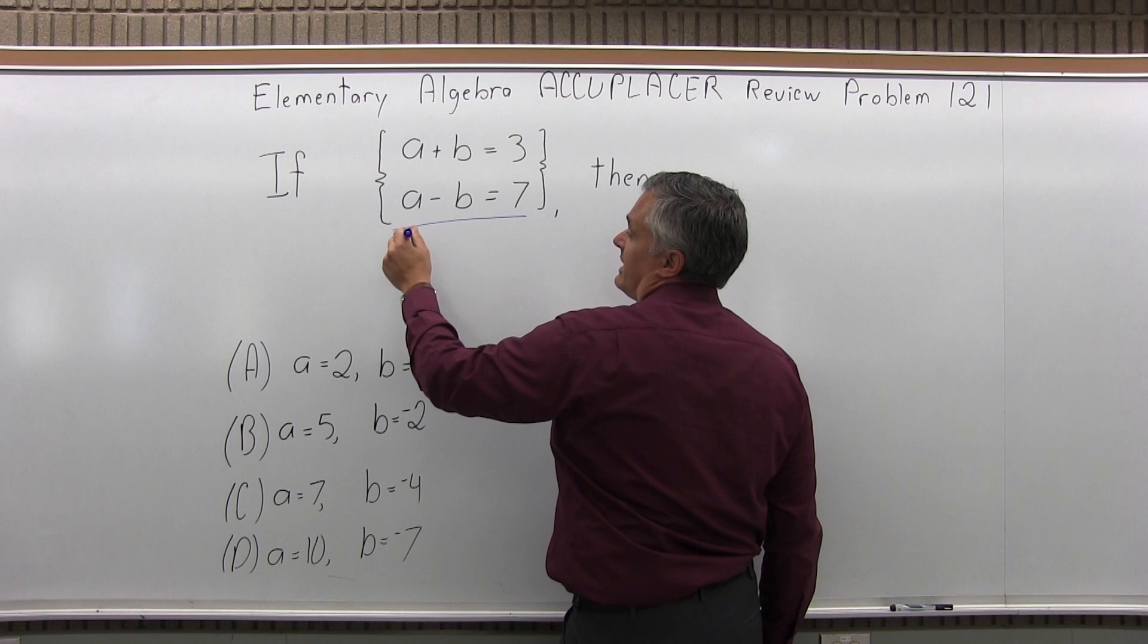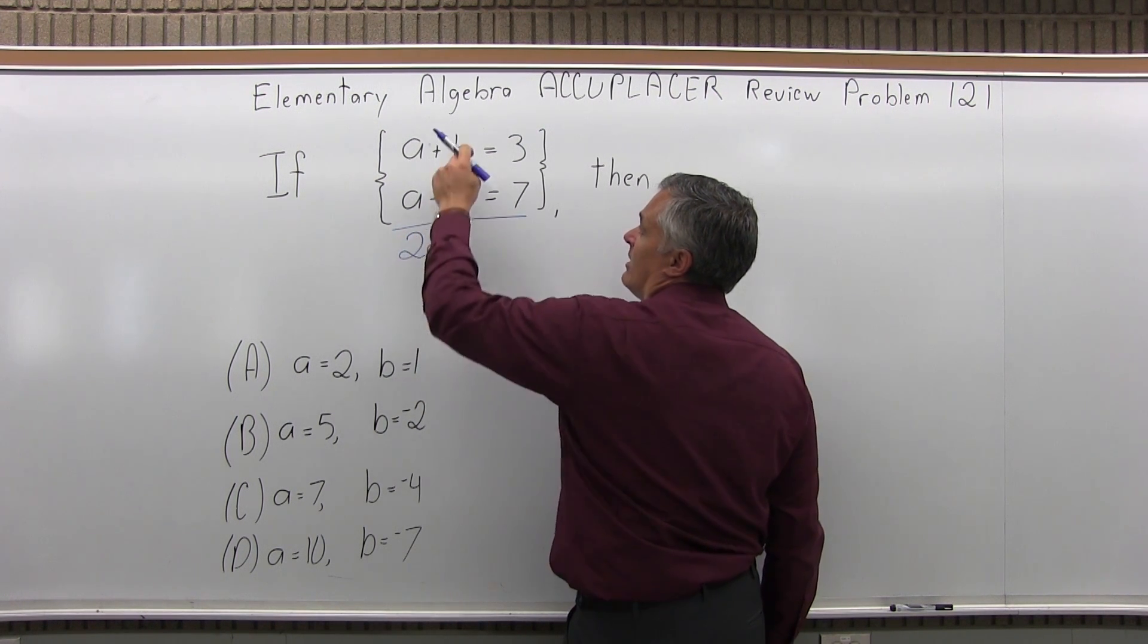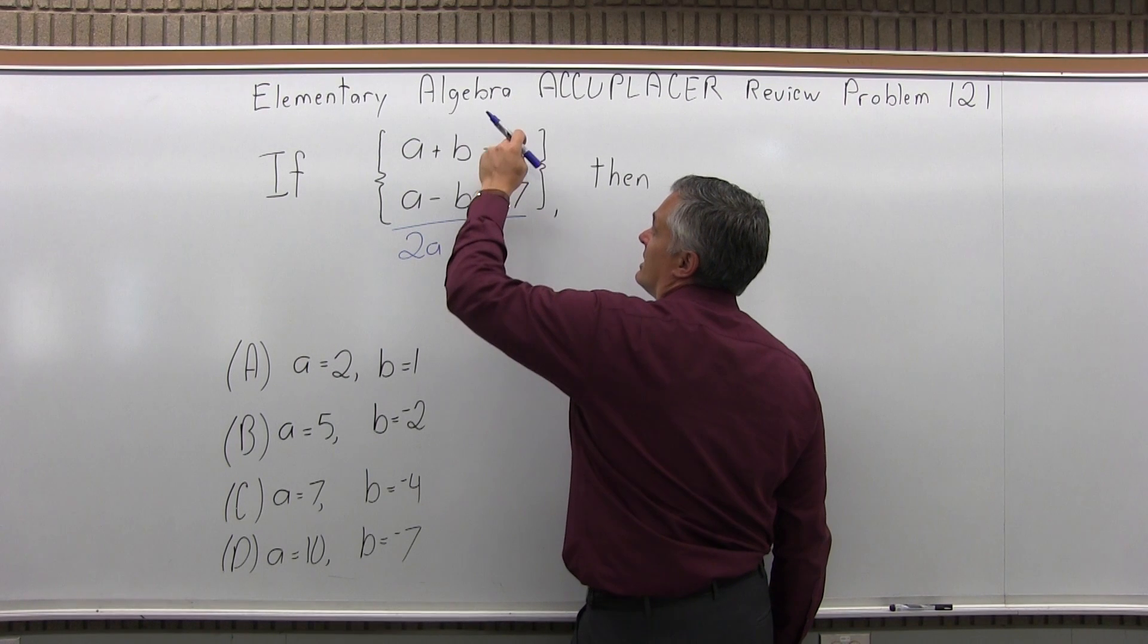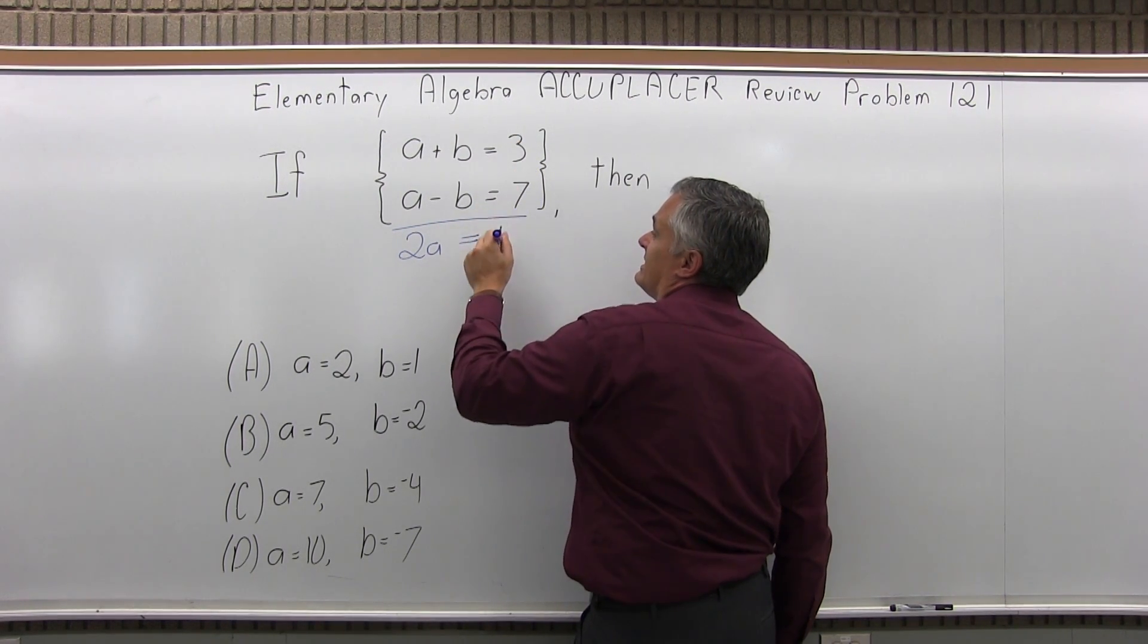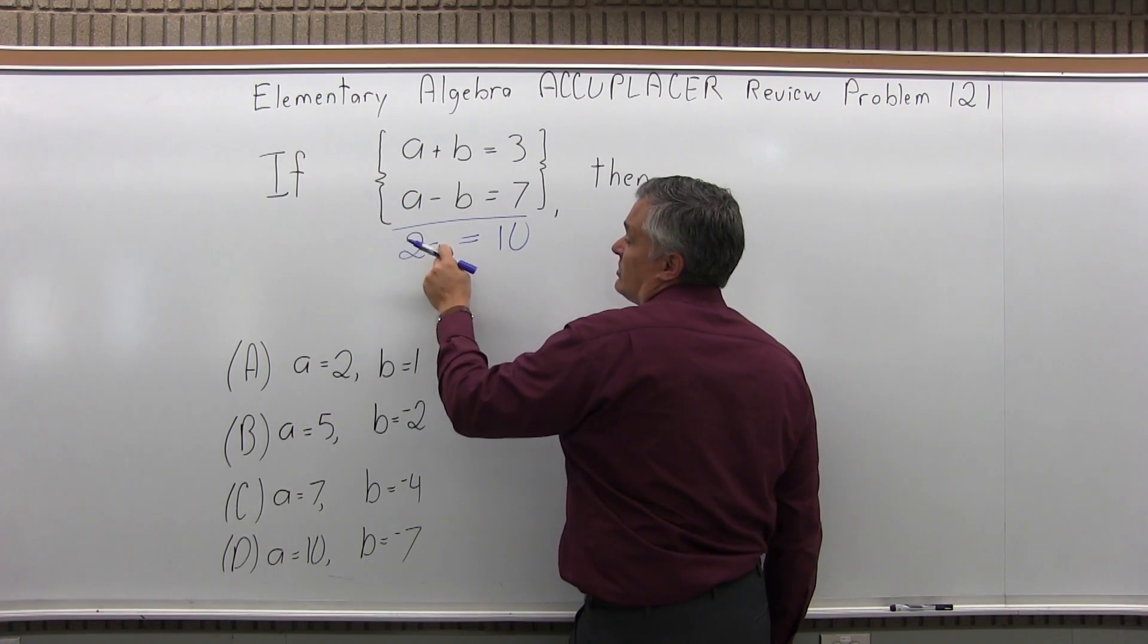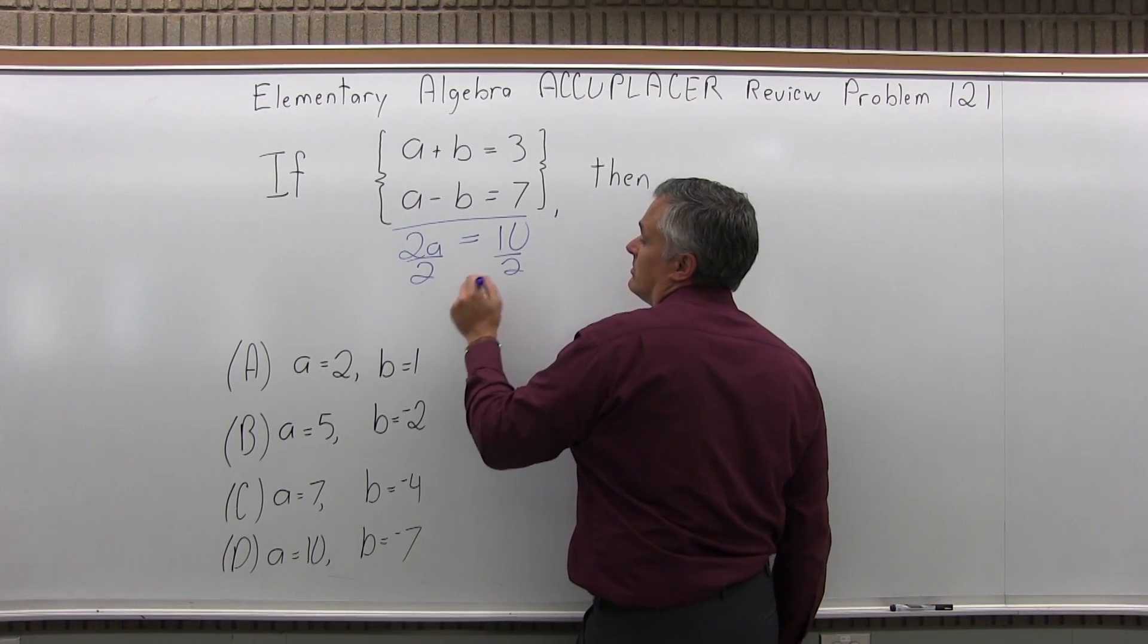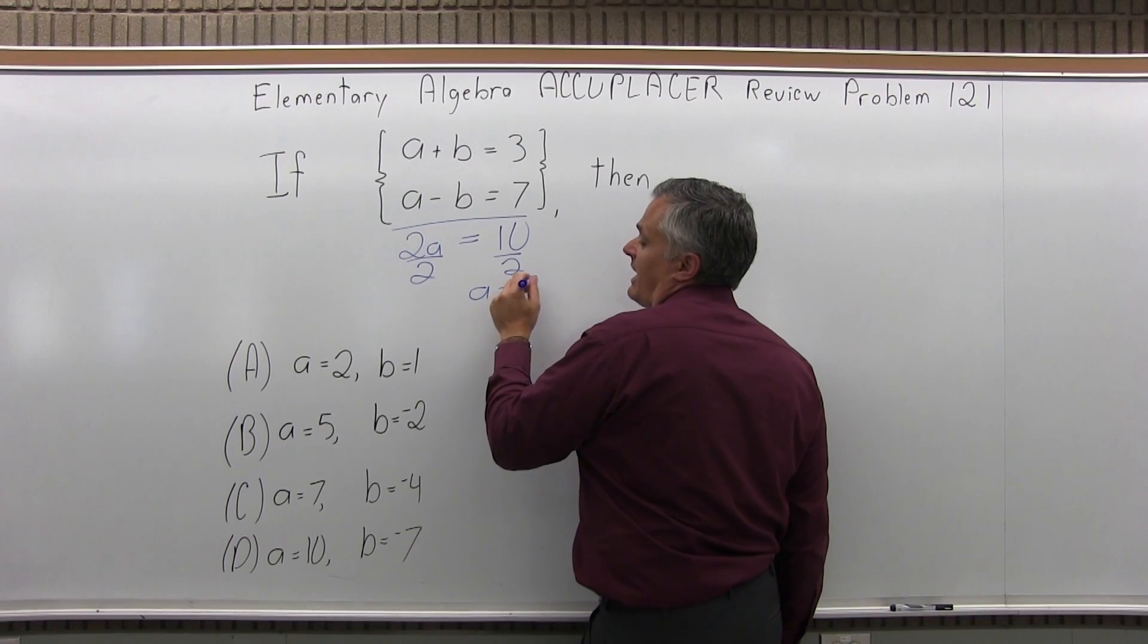So A plus A is 2A. Positive B plus negative B cancels, which is great, equals 3 plus 7 is 10. So I have 2A equals 10. Divide away the 2 and I have A is 5.